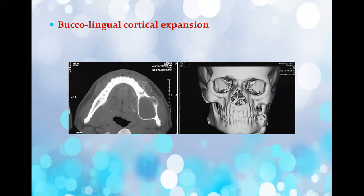The next question was about buccolingual cortical expansion, asking in which condition it is more commonly seen. Buccolingual cortical expansion is less frequently seen in odontogenic keratocyst, and it is more commonly seen in ameloblastoma, dentigerous cyst, and radicular cyst.